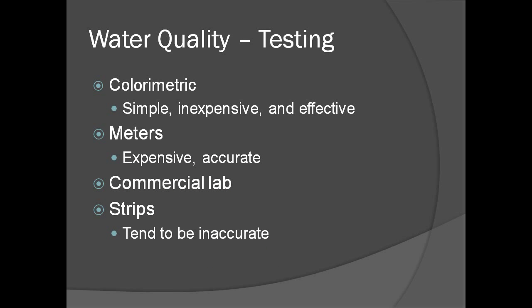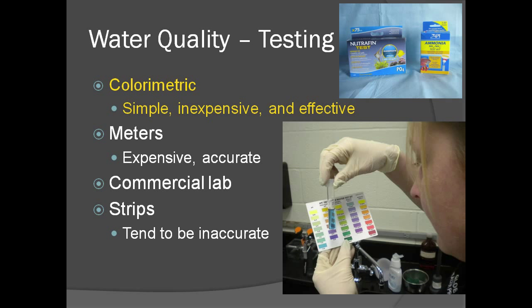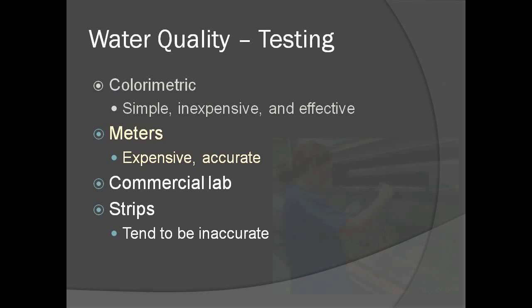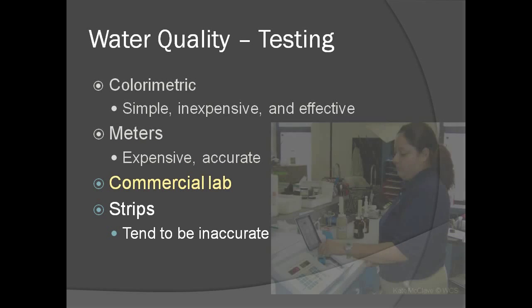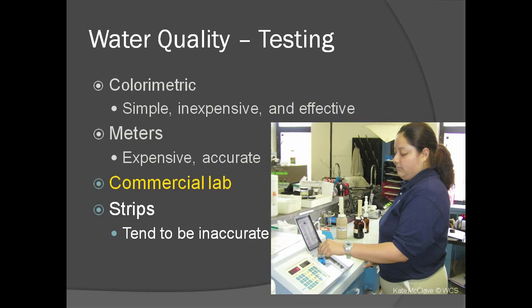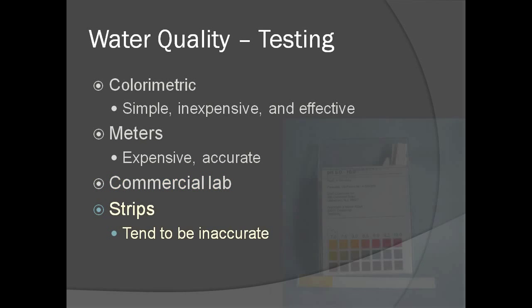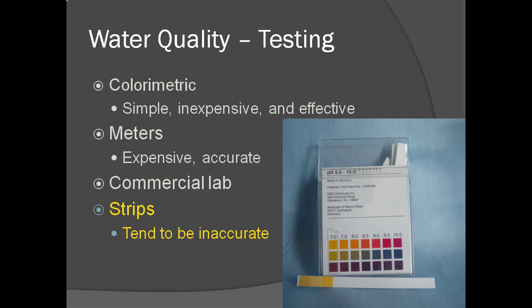There are various methods to test for the parameters we have been discussing. The colorimetric methods are popular as they are simple, inexpensive, and effective, though they do take some time to perform. There are various meters to measure dissolved gases and pH, which are expensive but very rapid and accurate. Samples may be sent to a commercial lab. There are also strip test kits available, but these tend to be inaccurate and should be avoided when possible.